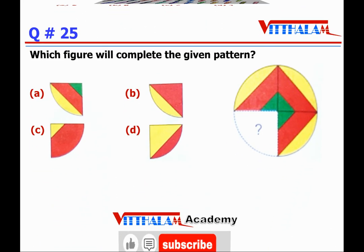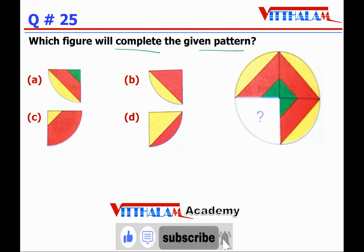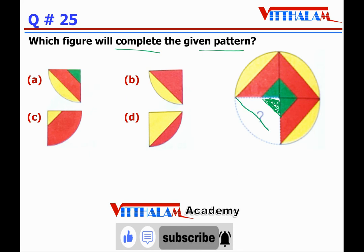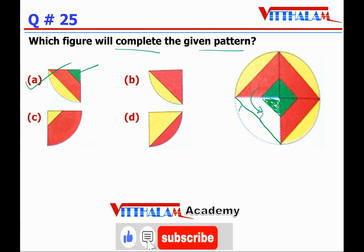Next, Question 25: which figure will complete the given pattern? The circle is divided into four equal parts. We need to find the missing one quarter part. Inside the pattern there is a triangle that is green colored, and the middle part is red colored, while the outside is yellow colored. Looking at option A — it has the green triangle, red middle, and yellow outside. So the answer is A.